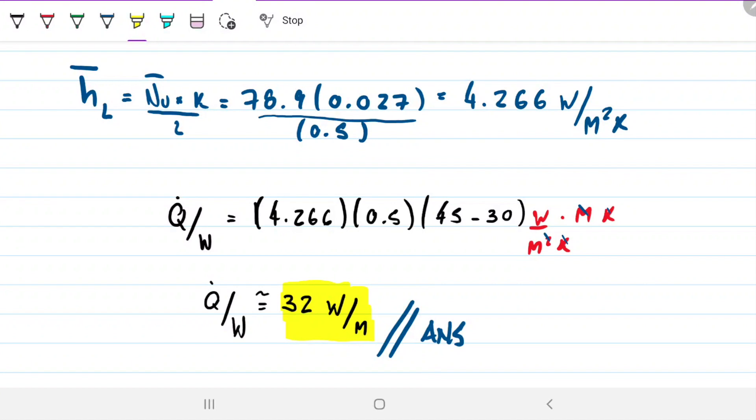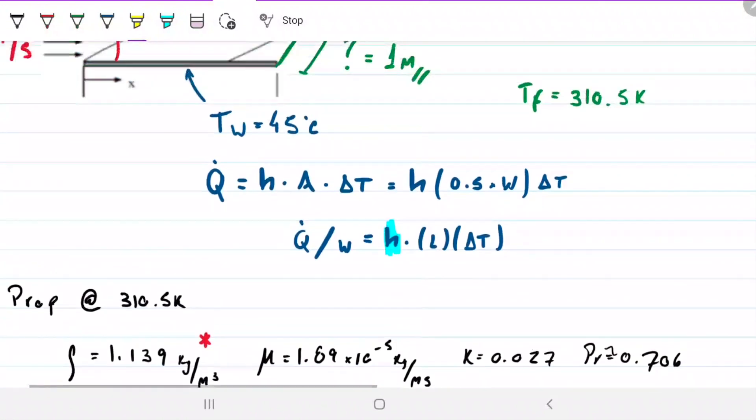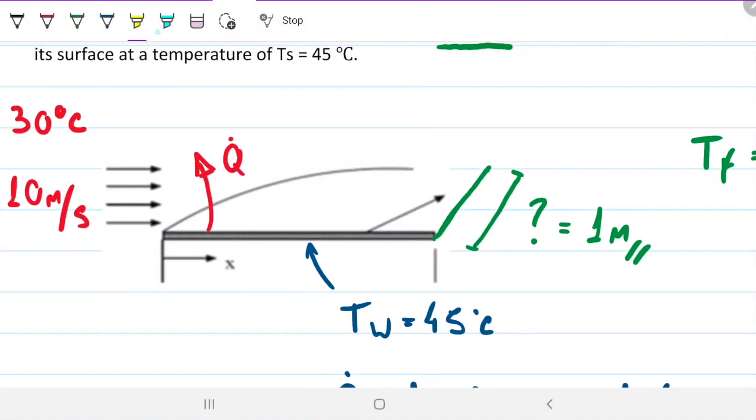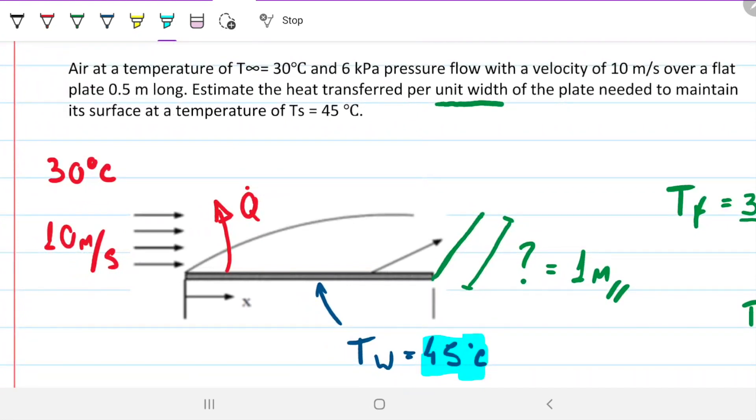So what are we saying? We're saying that this plate here is giving out 32 watts for every meter in width. So if we want to maintain this wall at 45°C, which is the point of the math that we did, we need to supply that amount of energy to the wall. Because if it's losing that amount of energy, its temperature will decrease as it's giving energy to the air. But if we supply it with the 32 watts per meter, then this wall is going to be kept at 45°C, which is what we want.